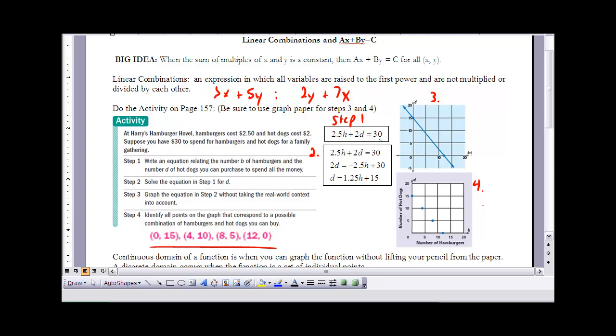Now part 2 said solve the equation for D. So if I do that, I'm going to start by bringing D, so I have D by itself, so I'm going to subtract 2.5H from both sides. And then once I do that, I need to divide both sides by 2 to get my value for D. So D is equal to 1.25H plus 15.